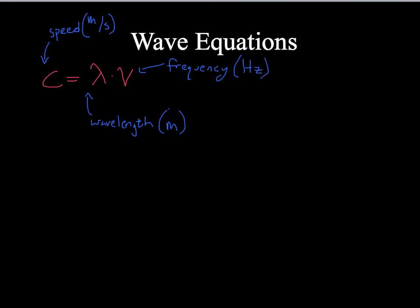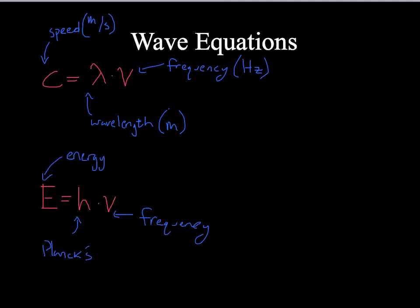The second equation deals with energy. It says the energy of a particular photon, or wavelength of light, is equal to Planck's constant times that wave's frequency. The units of energy, symbolized with a capital E, are joules. Planck's constant is joule seconds, and frequency is in hertz — there's that matching of units again. Those are the only two equations you'll really need to know; with those two, you can solve almost anything in this unit.